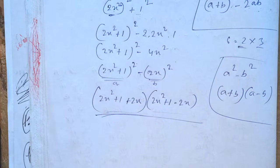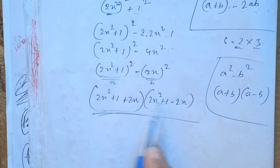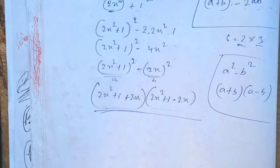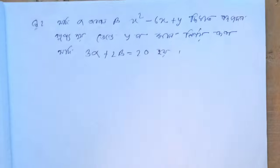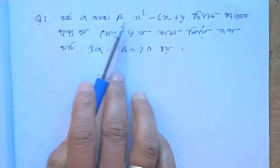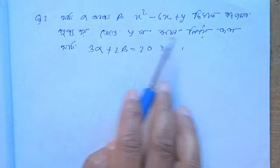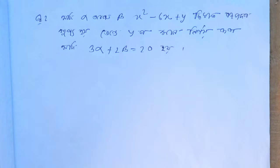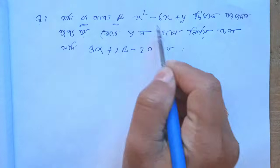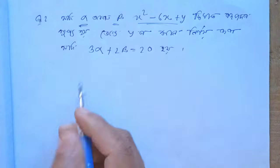Basically this is the product identity. Now let's look at the next question. The next question: if alpha and beta are roots of x squared minus 6x plus some constant, and we are given that 3 alpha plus 2 beta equals 20, then find alpha and beta.